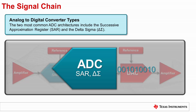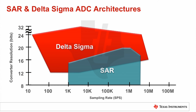The specific characteristics of the analog signal, in addition to the system's overall requirements, will determine which ADC architecture is best optimized for the task. The most important requirements include sampling rate, resolution, accuracy, power consumption, and cycle latency.